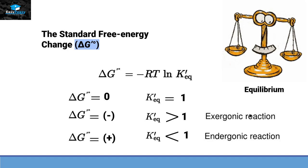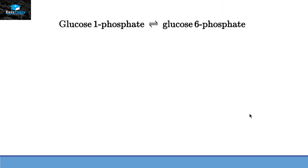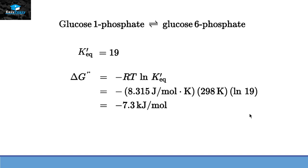Let's take a real-life example to understand this better. We have the reaction where glucose-1-phosphate converts into glucose-6-phosphate. This is again a two-way reaction. The equilibrium constant of this reaction is 19. Since the equilibrium constant is greater than 1, the ΔG° value is negative, so this reaction is exergonic.